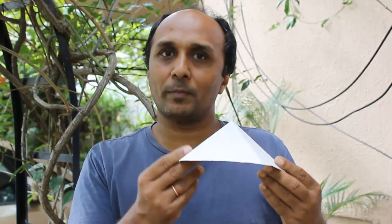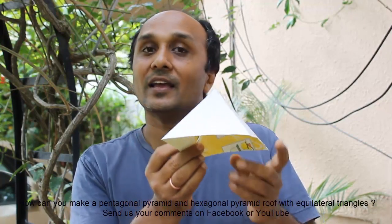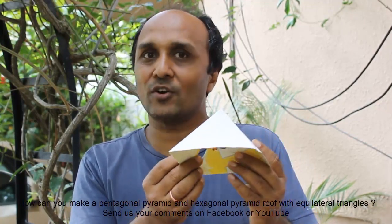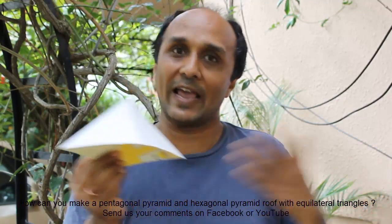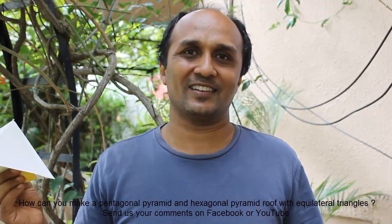I hope you enjoyed making the 3D pop-up house. And now it's time to think. So we made our pop-up roof with four equilateral triangles as a square pyramid. Can you make a pentagonal pyramid with five equilateral triangles or a hexagonal pyramid with six equilateral triangles? Send us your answers. Thank you.